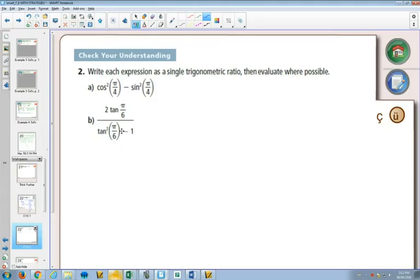Yes. Okay, because what's cos(π/4)? √2/2. So this will be (√2/2)² minus (√2/2)². So it's possible to do it that way.